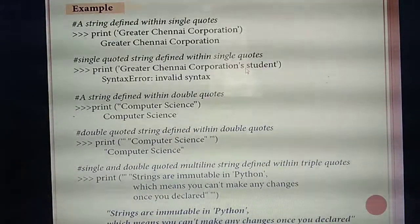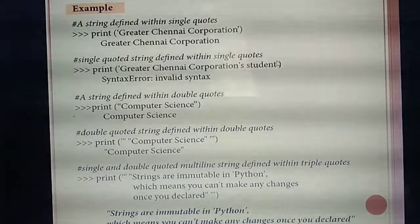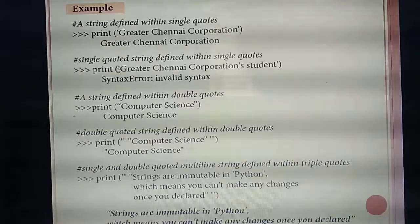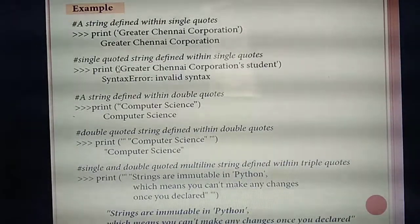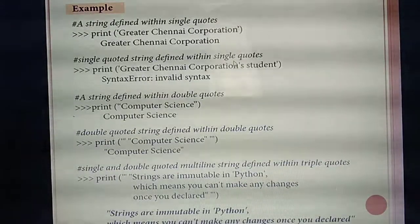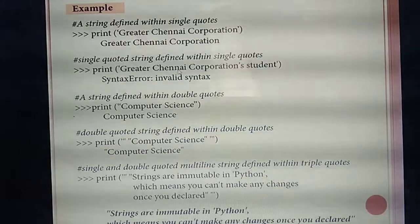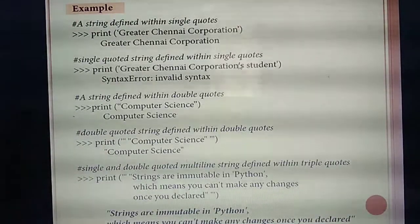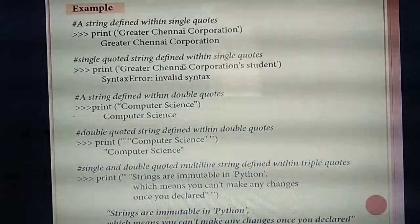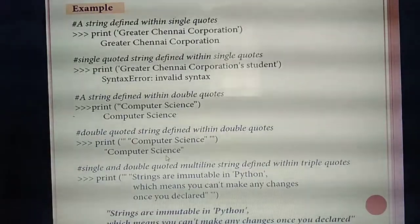If an apostrophe is there in a sentence and you give it in single quotes, the compiler will throw an error. If you run the program, the output will be 'SyntaxError: invalid syntax'. So if a quote is there inside a sentence, you need to declare it in double quotes.